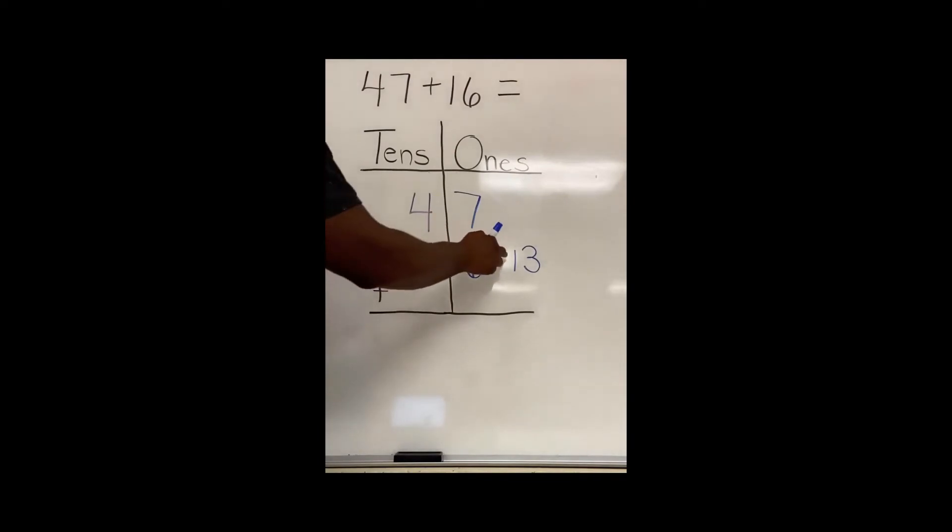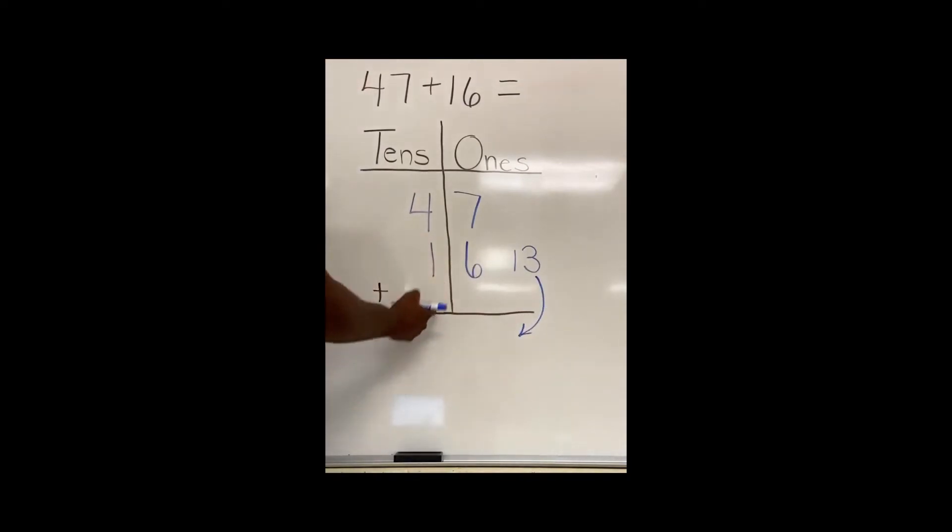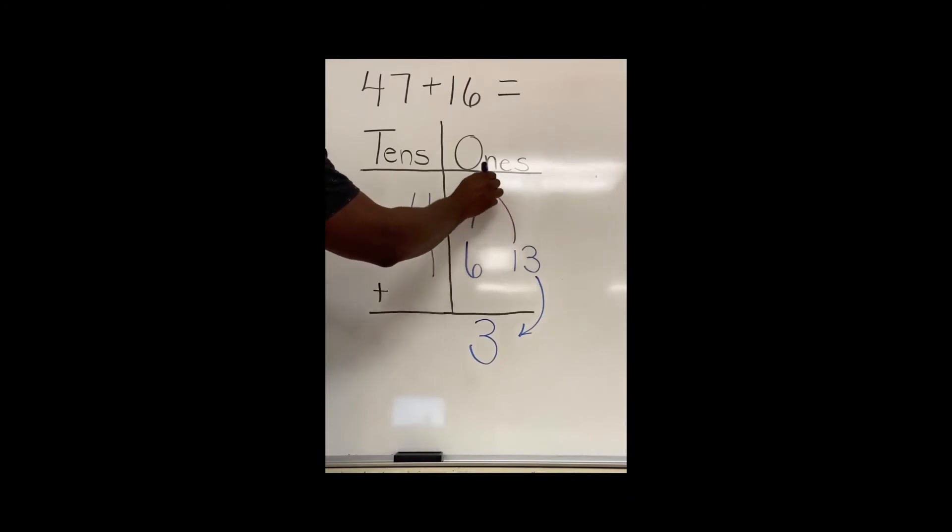Now, I have one ten and three ones. My ones come down and stay in the ones place. The ten that I made needs to come over to the tens place. It'll go right on top of that four.